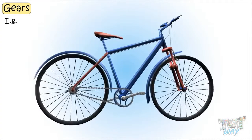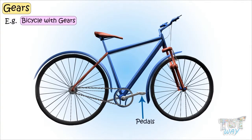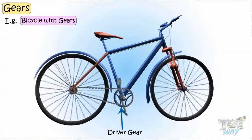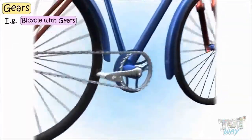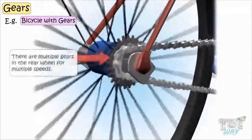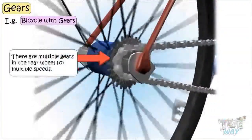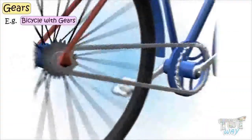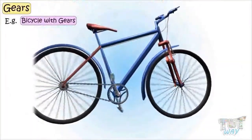In the case of a bicycle with gears, the pedals are attached to the driver gear, and through the pedals we crank the driver gear, which in turn turns the gears in the rear wheel. There are multiple gears in the rear wheel for various speeds, like speeding up and speeding down.